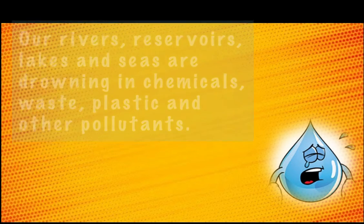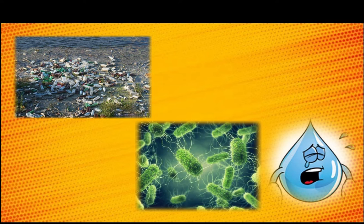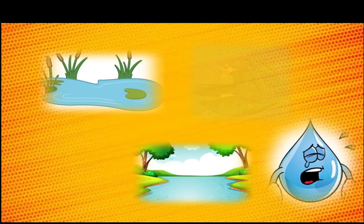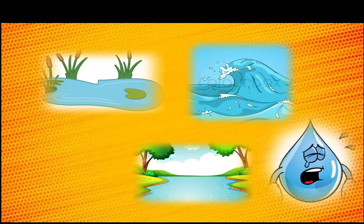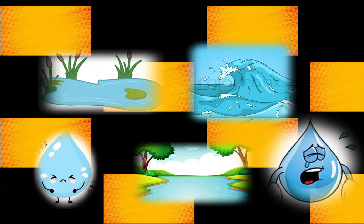Water pollution occurs when harmful substances, often chemicals or microorganisms, contaminate a stream, river, lake, ocean, aquifer or other bodies of water, degrading the water quality and rendering it toxic to humans or the environment.